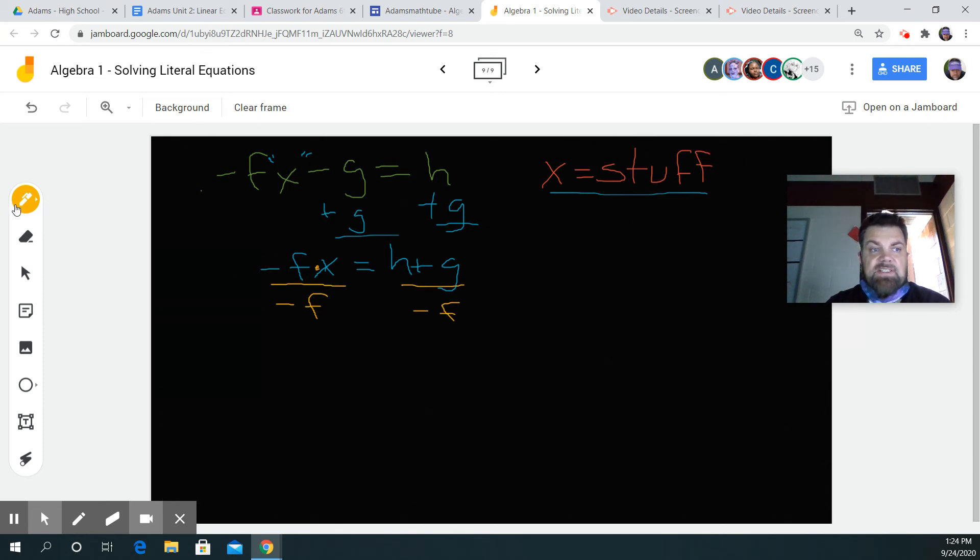So now what happens is, negative f divided by negative f becomes 1. 1 times x is just x. And that's equal to h plus g all over negative f.